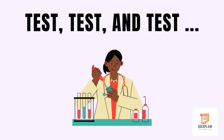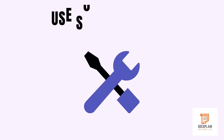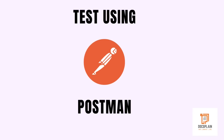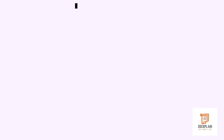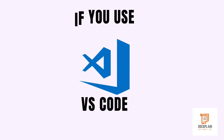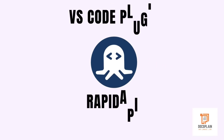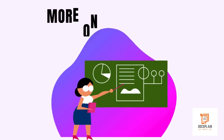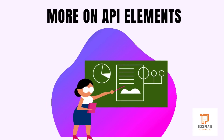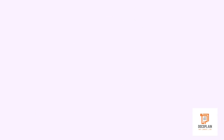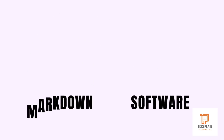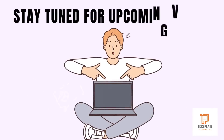All this process requires a lot of testing at your end. There are tools available that can help you sort it out. Your best bet will be on using Postman, but if you're using VS Code for your own writing, you could also use a plugin called Rapid API. We will be discussing more on each API documentation element, format styles, and software tools in our upcoming in-depth videos, so stay tuned.